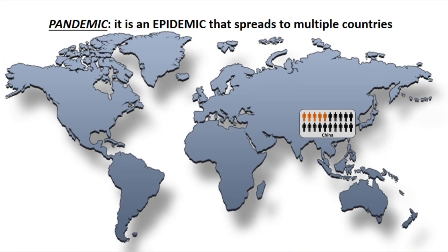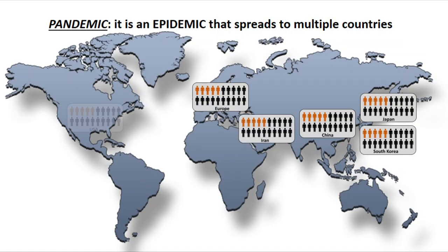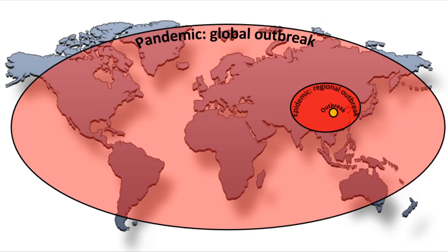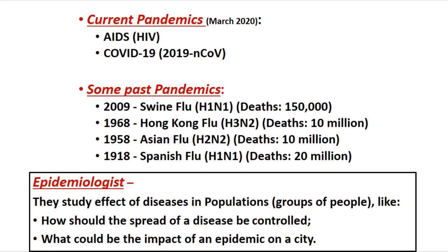A pandemic would be when the outbreak spreads to multiple countries and continents across the world. To summarize: an increase in cases of a particular disease in a local area is an outbreak, an outbreak spread over a vast region is an epidemic, and an outbreak spread over multiple countries is a pandemic.